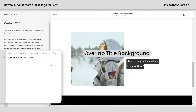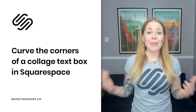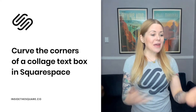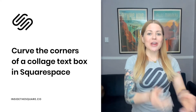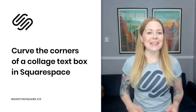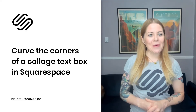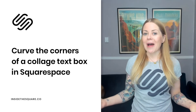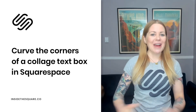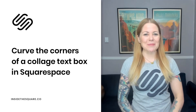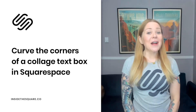Now, whatever you decide to do with your code, just select save when you're done and you'll be good to go. And there you have it. That code that I just shared is listed in the description below, and now that you know how to customize it, I hope you have fun applying this to your own Squarespace website.